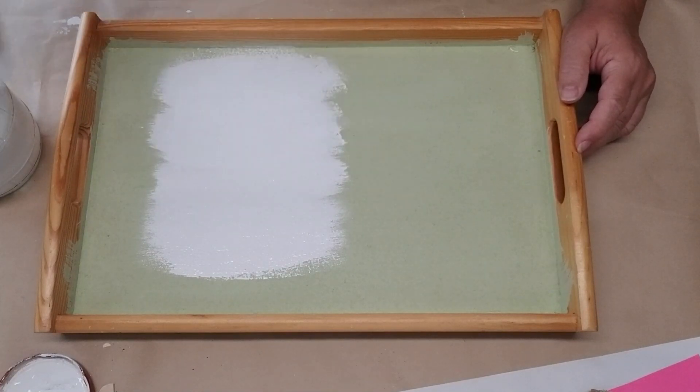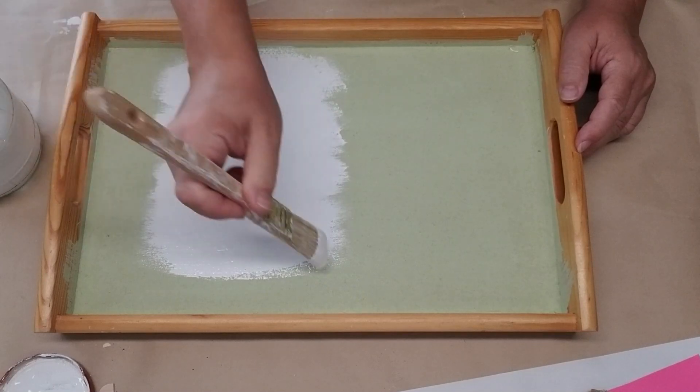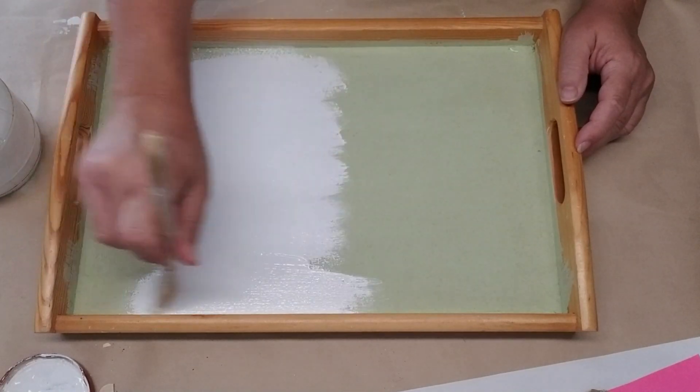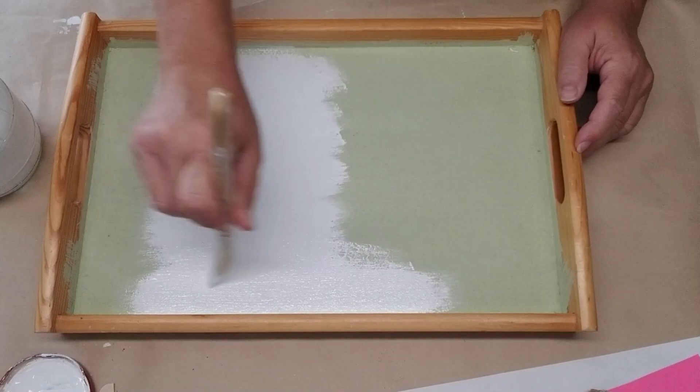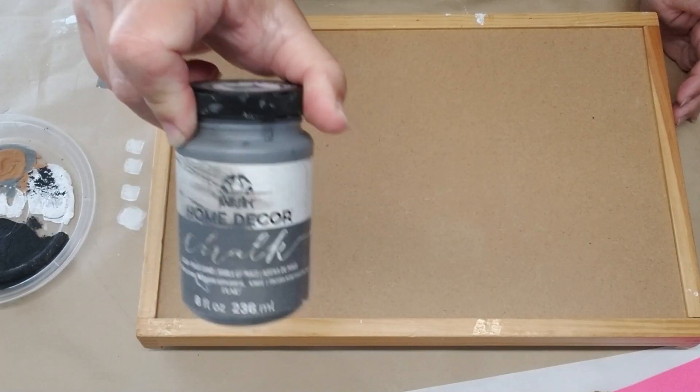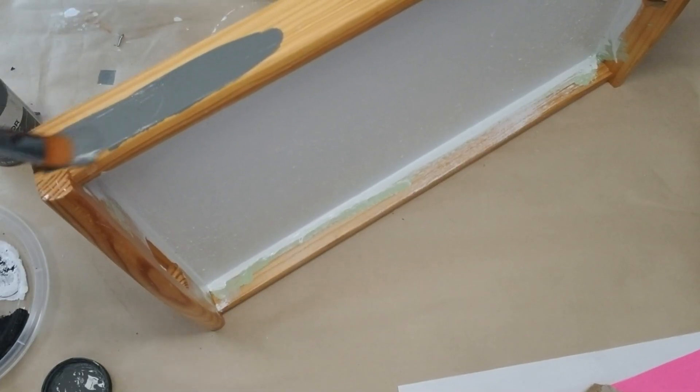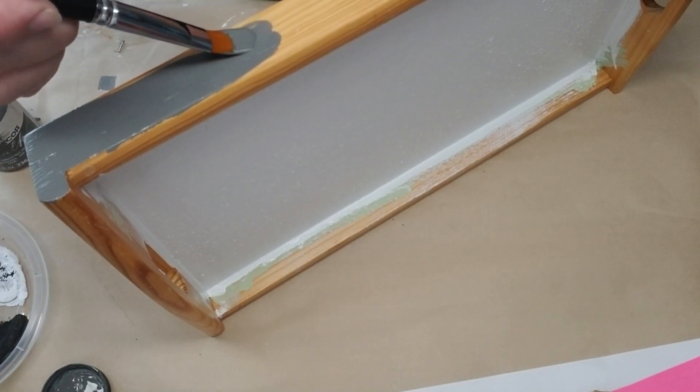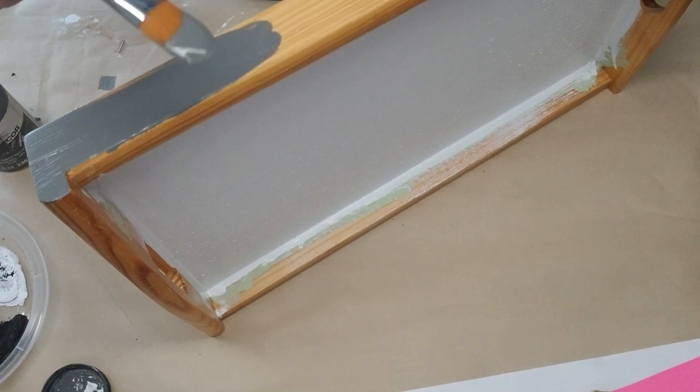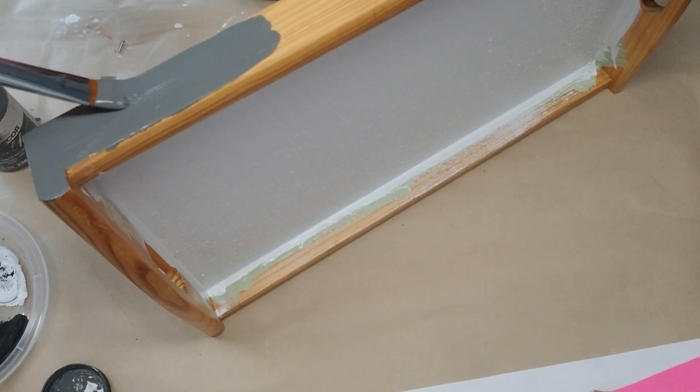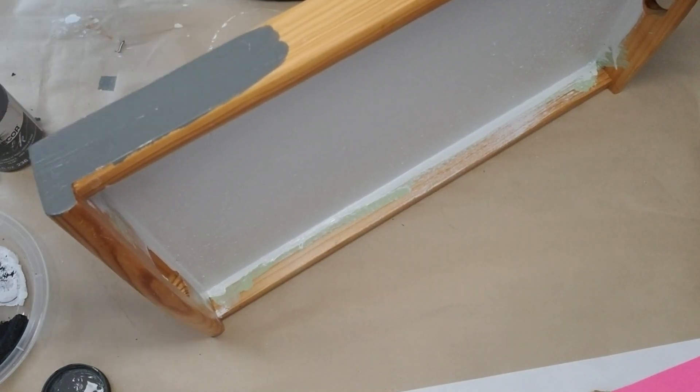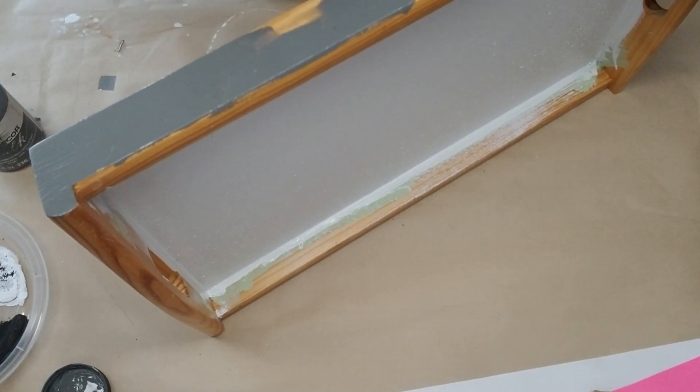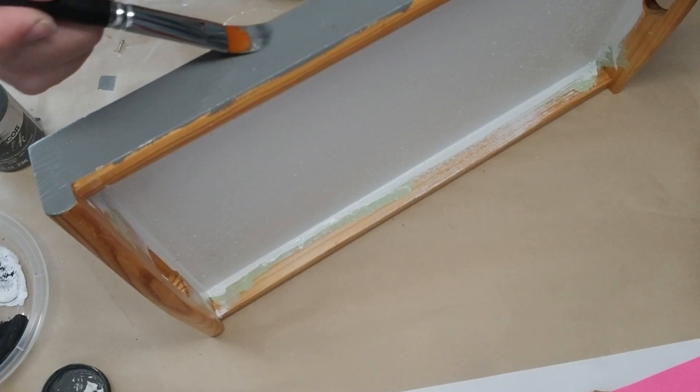I'm covering the whole bottom of the tray with DIY chalk paint. If you're interested in that recipe, it's down in my description box. For the frame of the tray, I'm using Folk Art Home Decor chalk paint in the color Maui Sand. It's a nice dark gray. I'll be doing one coat and then just touching it up where a little bit of the wood is showing through, but I will be distressing it, so I only will need one coat for this.